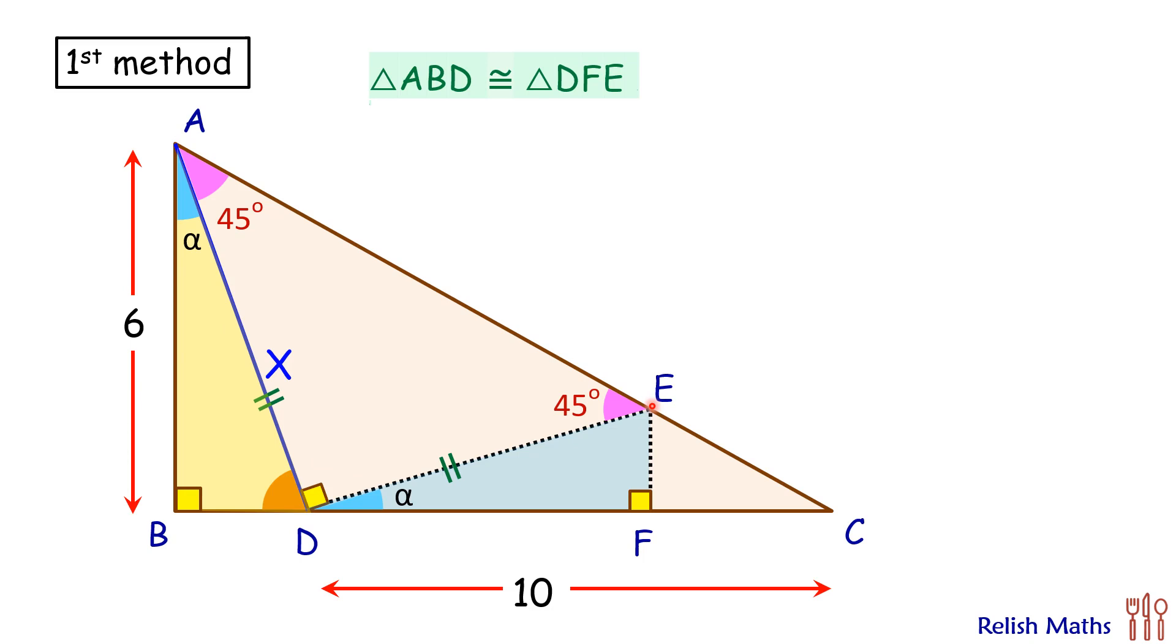So if we'll assume BD is a centimeter, then EF will again be a centimeter. Now here if we'll see AB is 6 centimeter, so if AB is 6 then DF will also be 6 centimeter. Now here DF is 6 and thus FC will be 10 minus 6 or 4 centimeter.